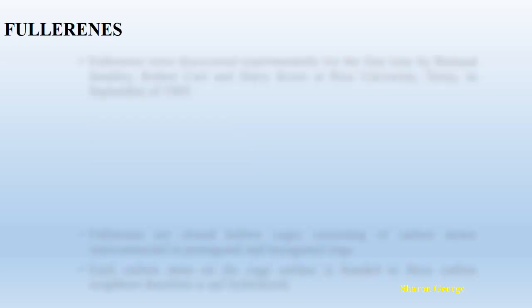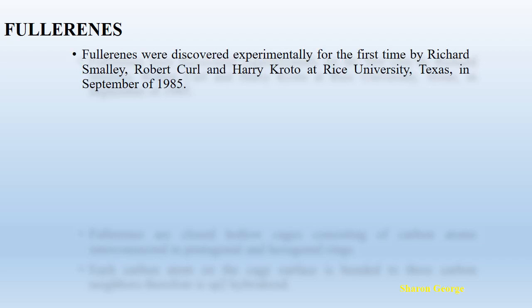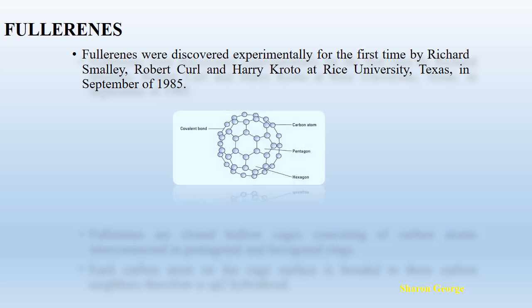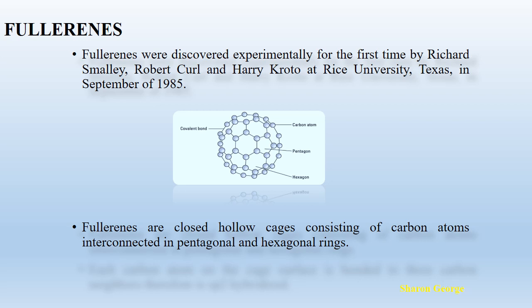Basically, fullerenes are closed hollow cages consisting of carbon atoms which are interconnected in pentagonal and hexagonal rings. Fullerenes were discovered experimentally for the very first time by a group of scientists from Rice University in the year 1985. Here we can see each carbon atom on the cage surface is bound to three neighboring carbons. Therefore, this is an sp2 hybridized structure, and the pentagonal and hexagonal rings we can clearly see from this picture.